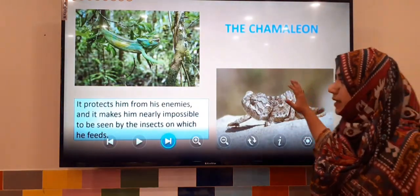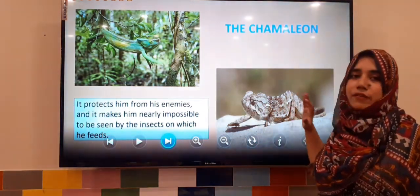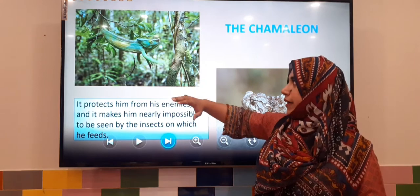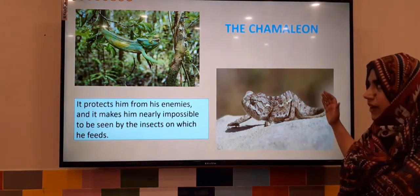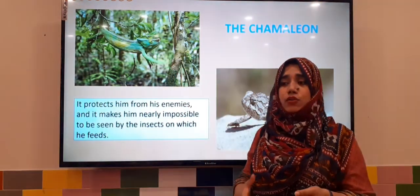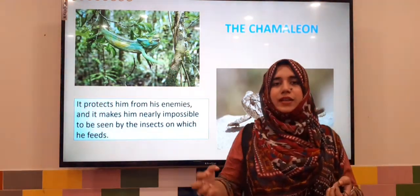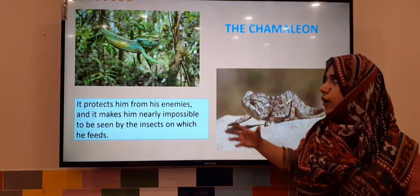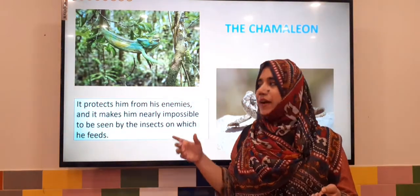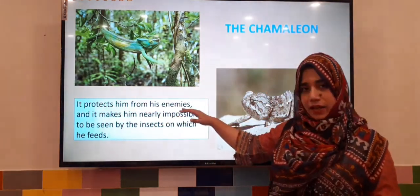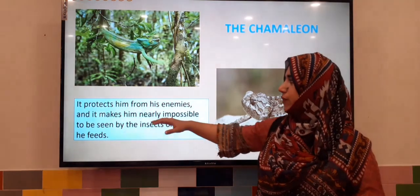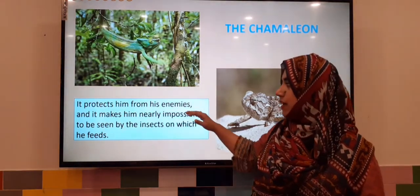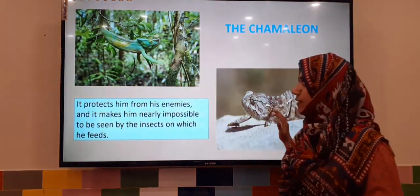The chameleon comes from the reptile family, and it is very famous for its color-changing ability. When it goes on any brown structure it becomes brown, when it goes on any green structure it becomes green, and when it goes on any different colored object or structure it changes its color to match. The main benefits of this are: it protects the chameleon from its enemies, and it makes it nearly impossible to be seen by the insects on which it feeds.